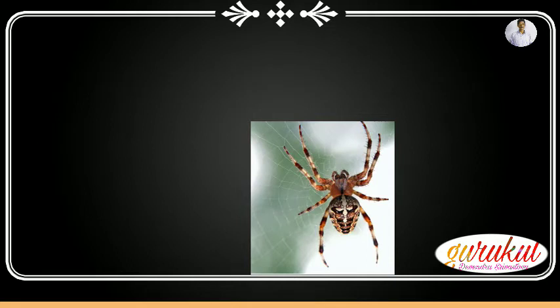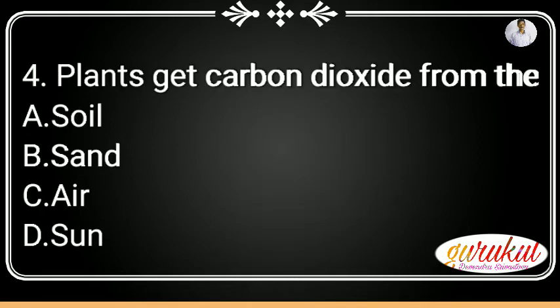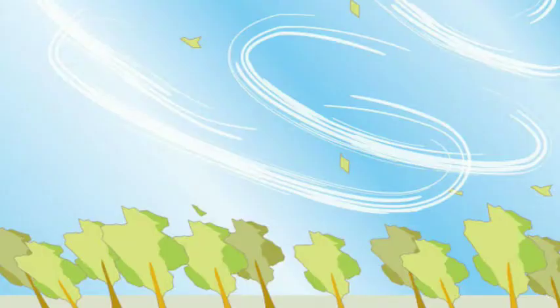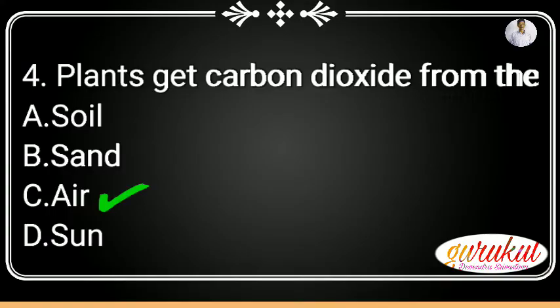Question four: Plants get carbon dioxide from — option A: air. The answer is option A.